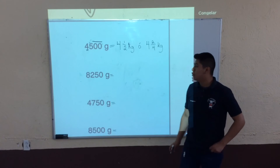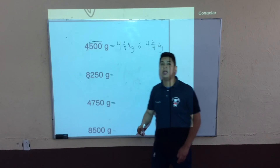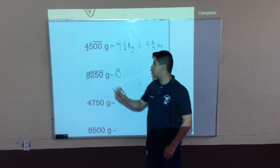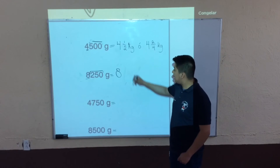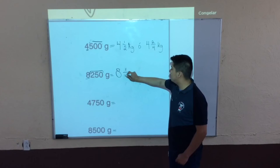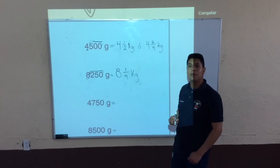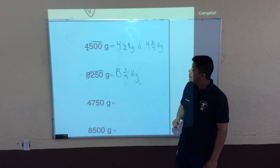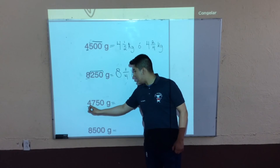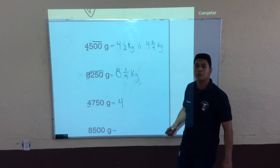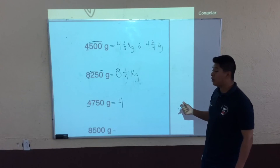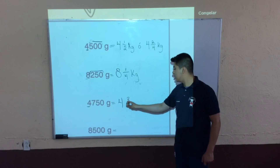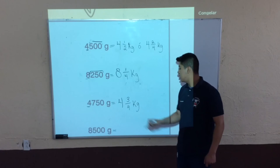Ahora nos vamos con 8250. Recordemos que el mil va a pasar como entero: 8. ¿Cuánto equivale 250 gramos a fracción? Equivale a un cuarto de kilogramos. Nos vamos a los 4750. Ya habíamos dicho que los miles siempre pasan como entero: tenemos 4. ¿Cuánto equivale 750 gramos a fracción? Equivaldría a 3 cuartos de kilogramos.